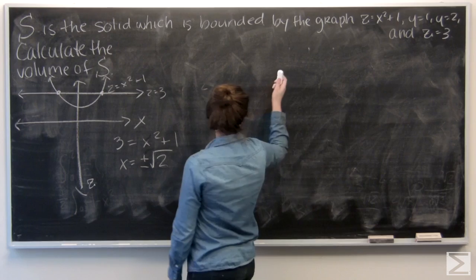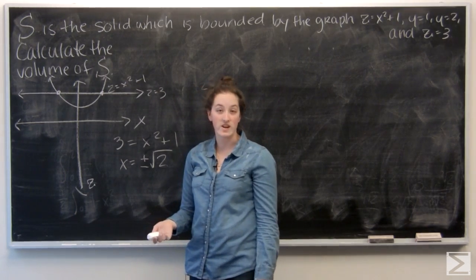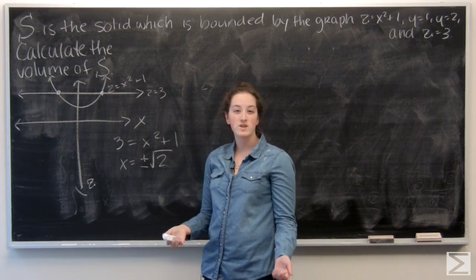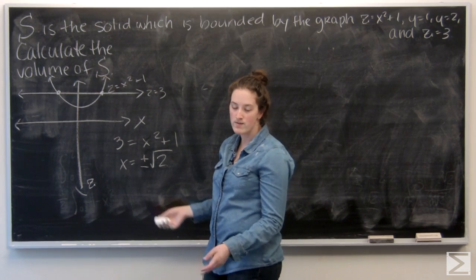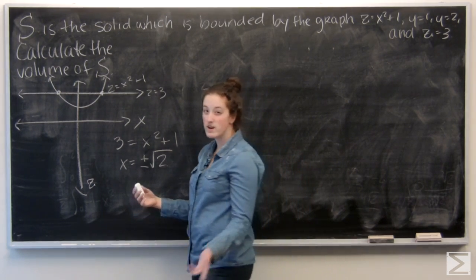So now I have x bounds, y bounds, and z bounds, so I'm ready to start integrating. I'm going to put the x bounds on the outside and then y. They're both constants, so it doesn't really matter which order I integrate in.